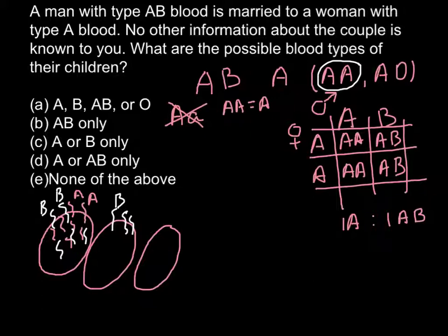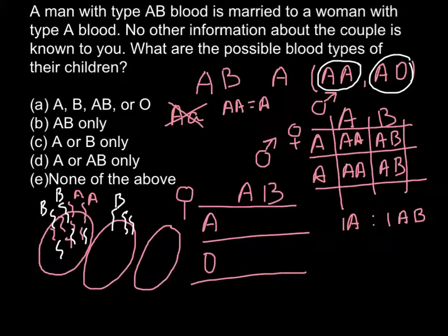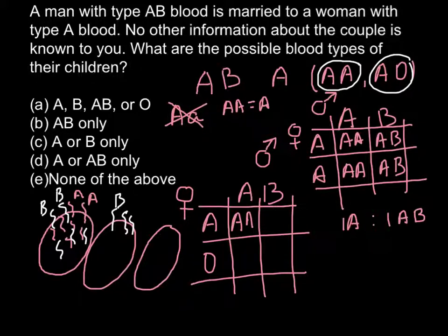So what about the other possible combination? This is going to be AB, once again for the male parent. And this is our second combination for the mother, we might have AO. So this is going to be the other side. So here, once again, we have AA, and here we have AO, AB.